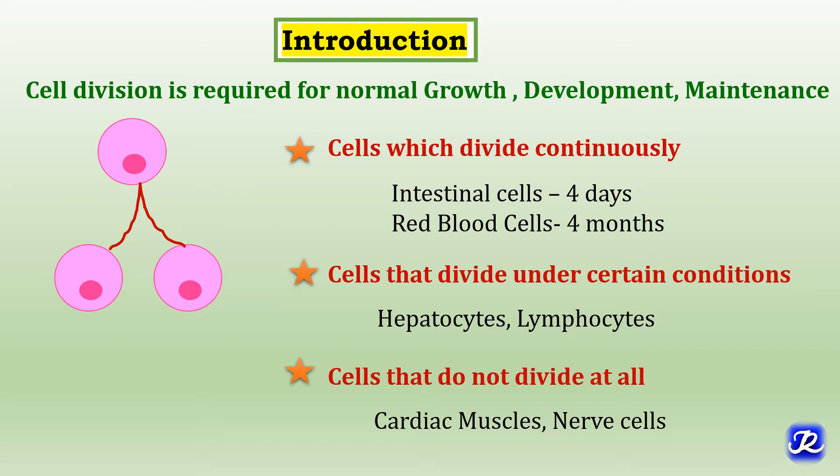Human beings have developed elaborate control mechanisms to regulate cell growth, proliferation, and differentiation. Cells that die either by senescence or as a result of tissue damage are replaced by new cells in a strictly regulated manner. If there is any derangement in the control of cell growth, proliferation, differentiation, and survival, it can cause cancer.